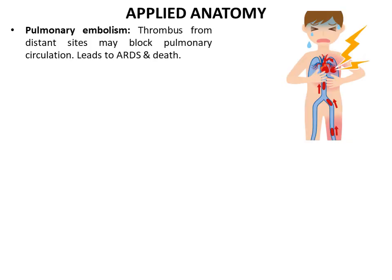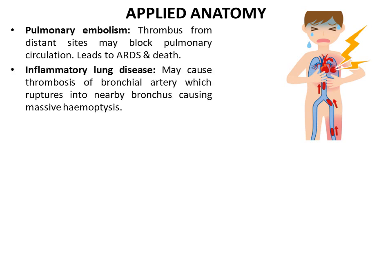A thrombus from distant sites like the lower limbs may enter the pulmonary circulation and block the pulmonary capillaries, which may lead to acute respiratory distress syndrome and death. Inflammatory lung disease may sometimes cause thrombosis of the bronchial arteries, which lie close to the bronchus, and may rupture into the bronchus leading to massive vomiting of blood called hemoptysis.